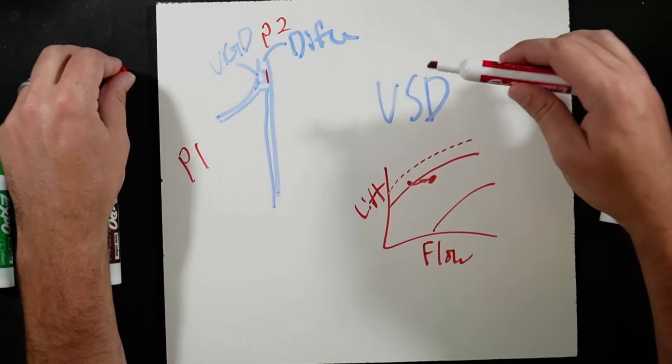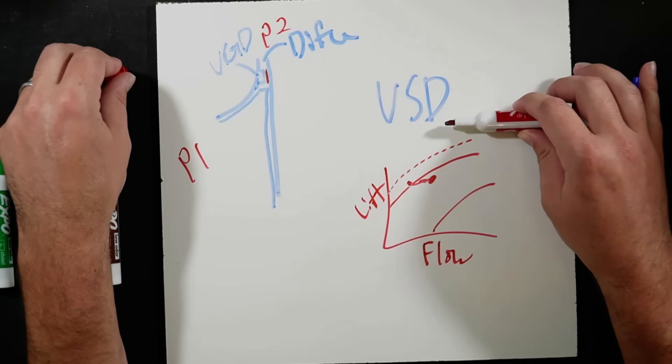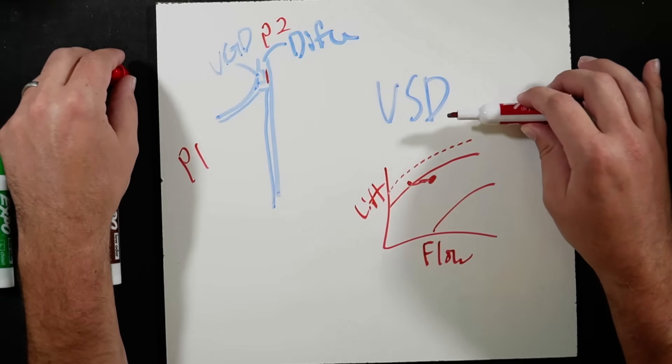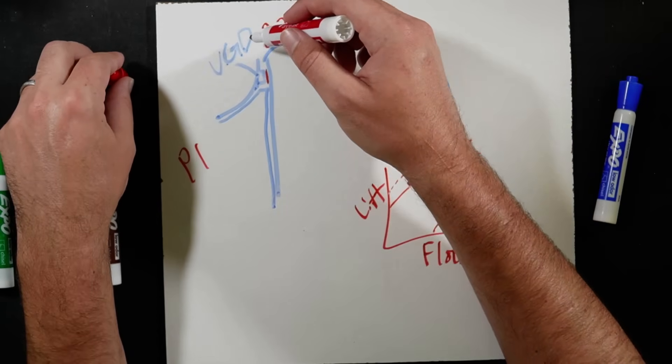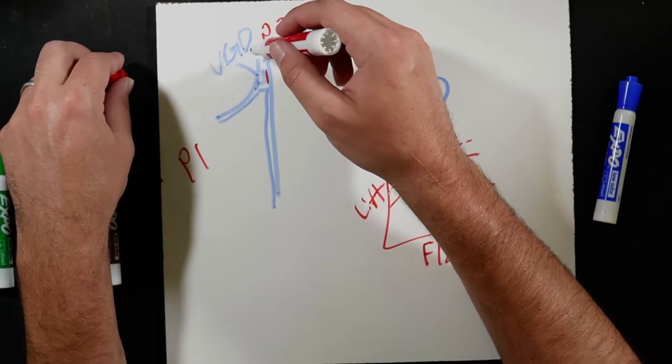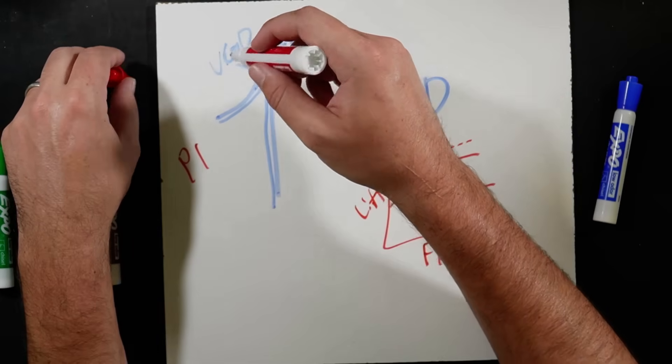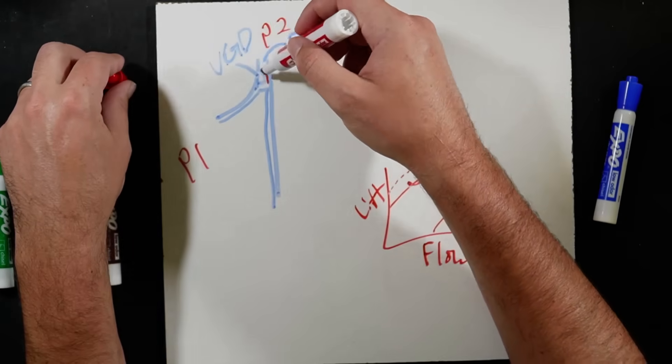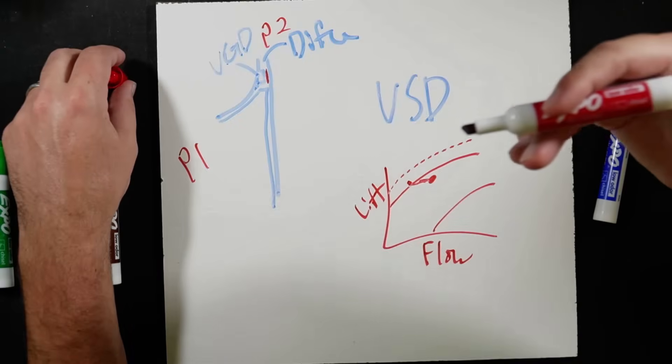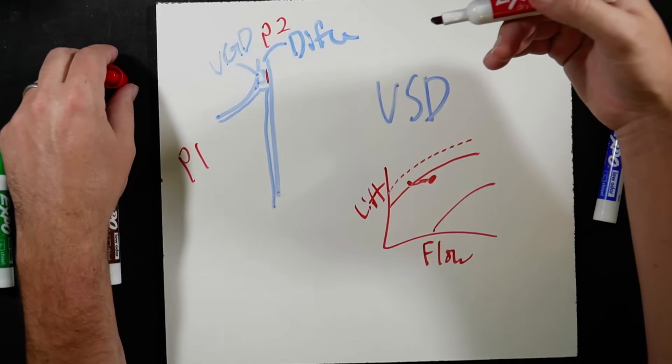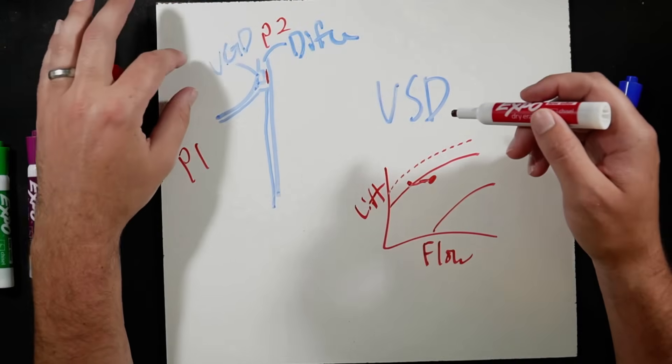But once the compressor actually hits its minimum reference speed that it can get to, then the compressor will intentionally use this VGD, not just for surge protection, but also for unloading the compressor further by restricting this diffuser gap and allowing less total volume through. So it serves a dual function at that point with what it's doing.